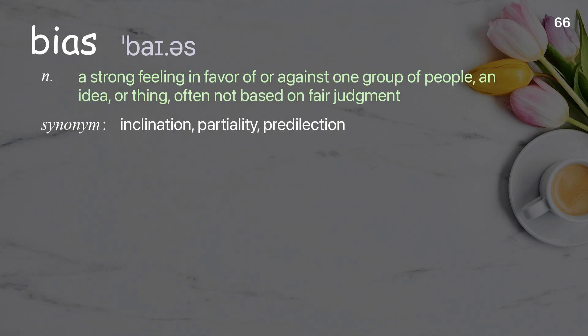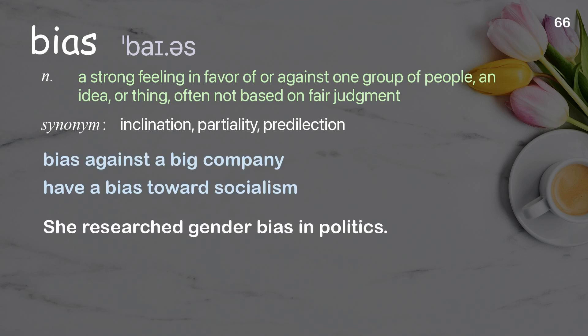Bias: a strong feeling in favor of or against one group of people, an idea, or thing, often not based on fair judgment. Examples: bias against a big company, have a bias towards socialism. She researched gender bias in politics.